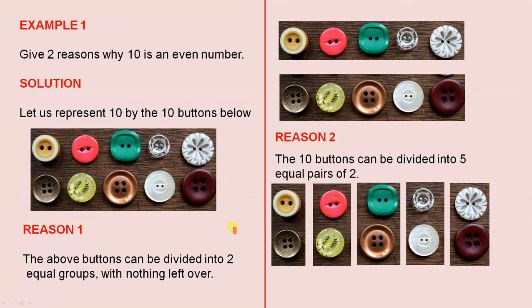This is the first reason why ten is an even number. The above buttons can be divided into two equal groups with nothing left over. So there's one group here. There's another group here. They're both even because they have five in them. When I say even, there's the same number of buttons in each group. That gives us the reason, the first reason why ten is an even number because you can divide it into two groups where each group has the same number of objects.